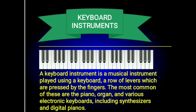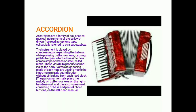A keyboard instrument is a musical instrument played using a keyboard — a row of levers pressed by the fingers. The most common are the piano, organ, and various electronic keyboards including synthesizers and digital pianos. Accordions are a family of box-shaped musical instruments of the bellows-driven free-reed aerophone type, colloquially referred to as a squeeze box. The instrument is played by compressing or expanding the bellows while pressing buttons or keys, causing pallets to open and allowing air to flow across strips of brass or steel called reeds, which vibrate to produce sound.